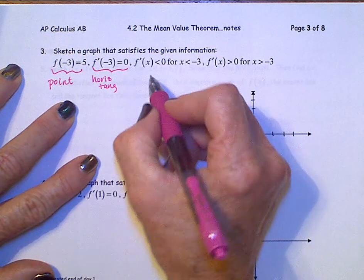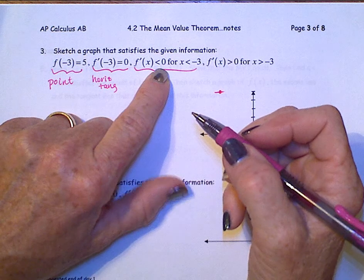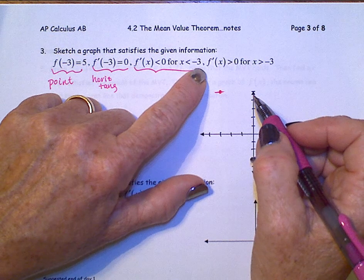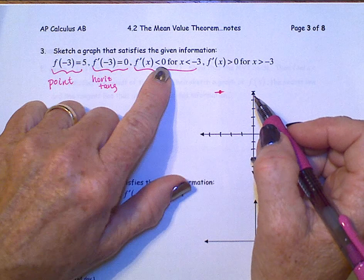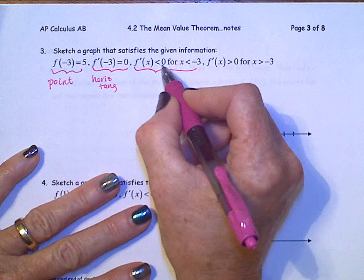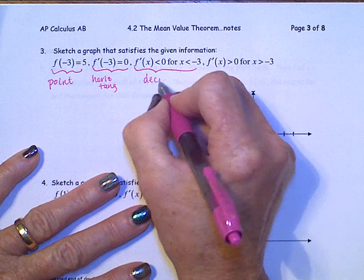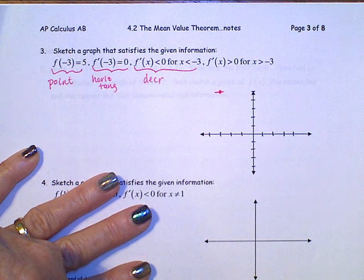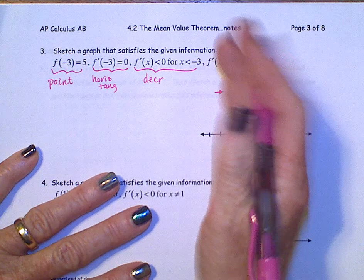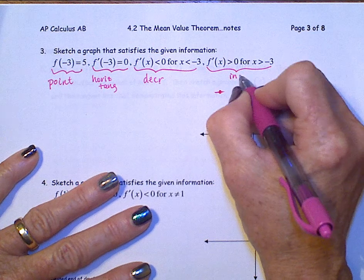All right, this next bit, f prime of x is less than 0 for x less than negative 3. f prime of x is less than 0 for x less than negative 3. f prime negative means that f of x is decreasing. And next piece, f prime greater than 0 when x is to the right of negative 3. That means that f of x is increasing.